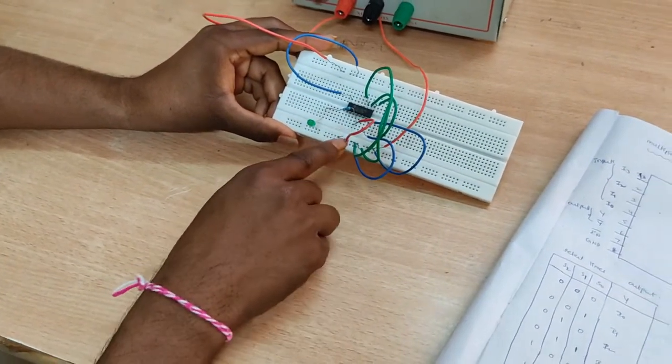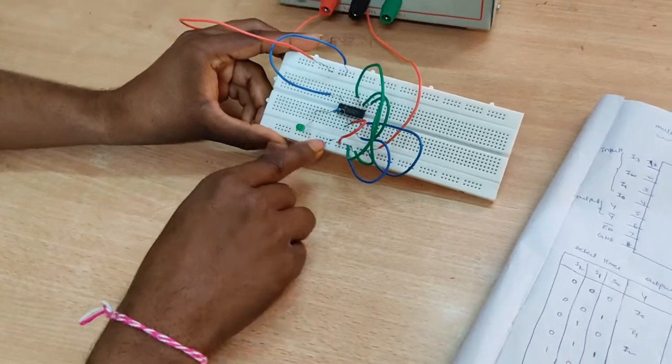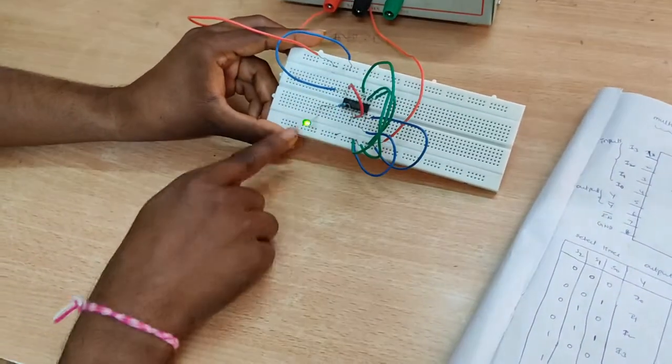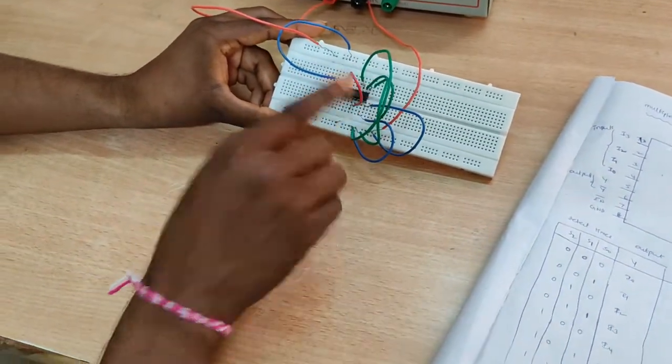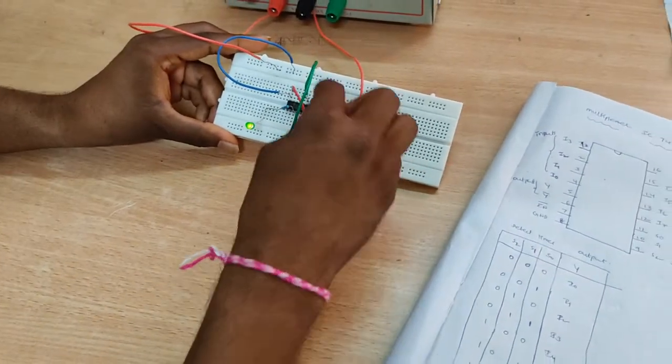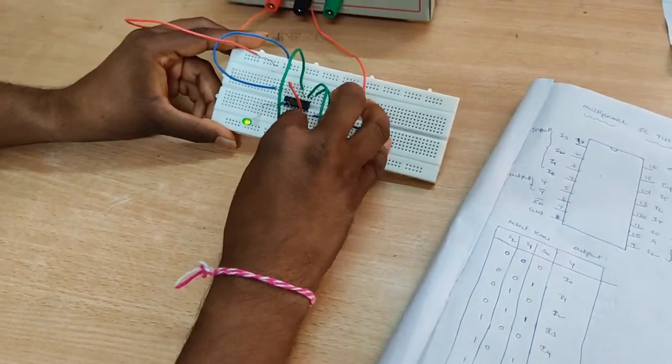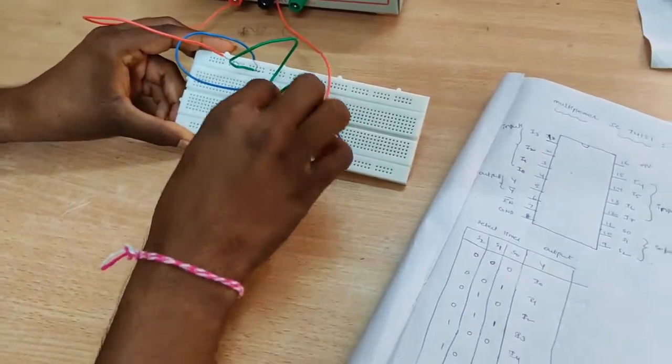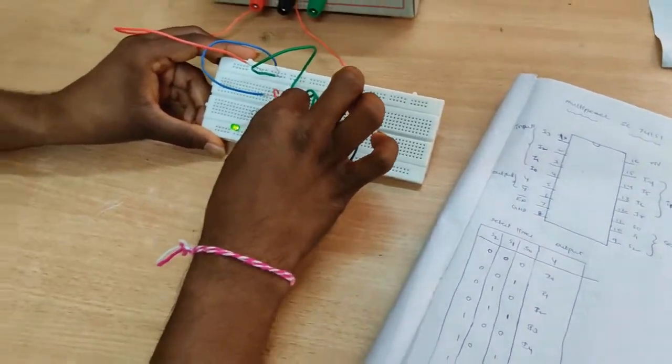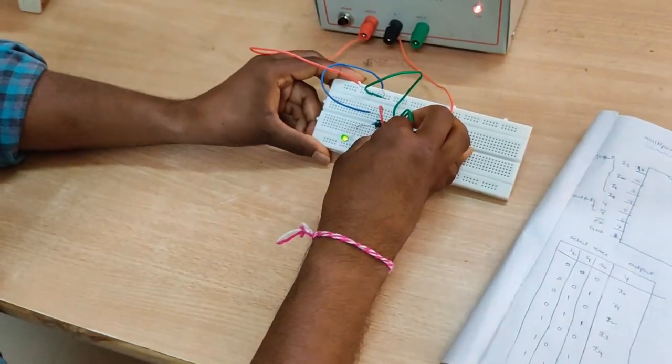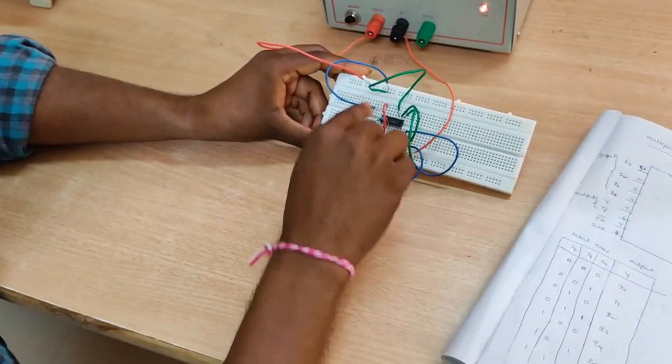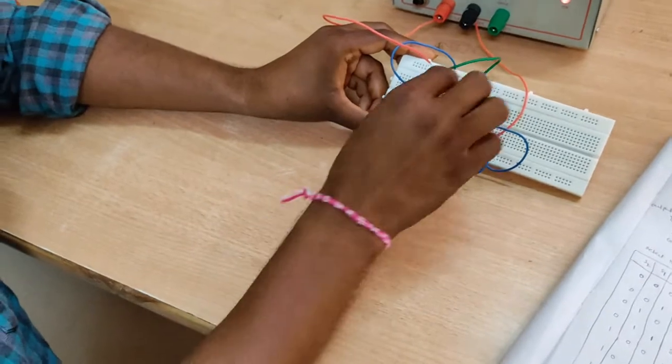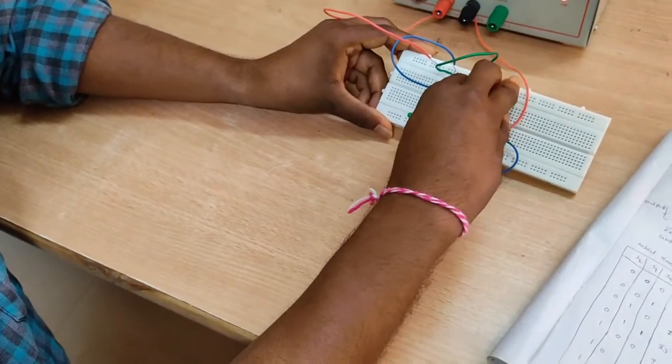That means if I0 is 0, output is 0. If I0 is 1, output is 1. So based on the selection lines, if S0 is given to the 1, then I1 is selected. So I1 is 1, that's why LED is on. But if I1 is 0, LED is off.